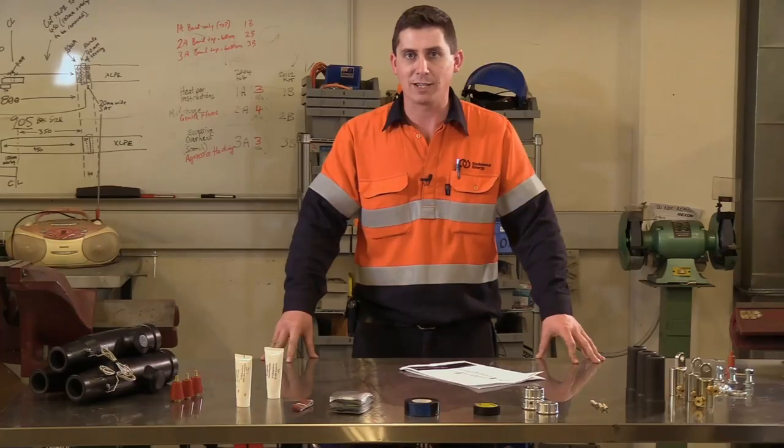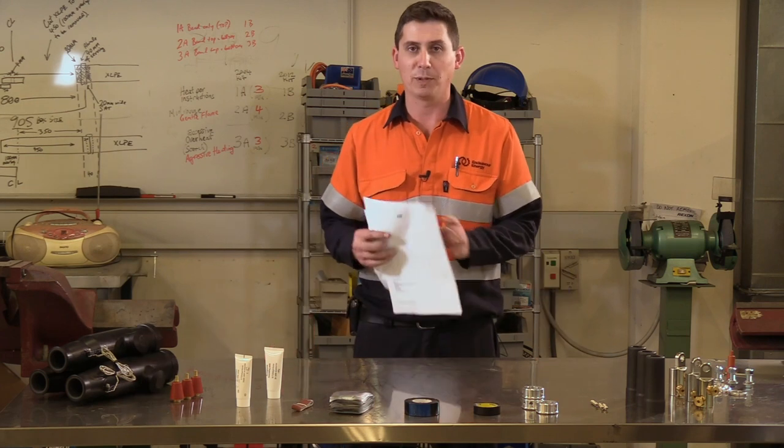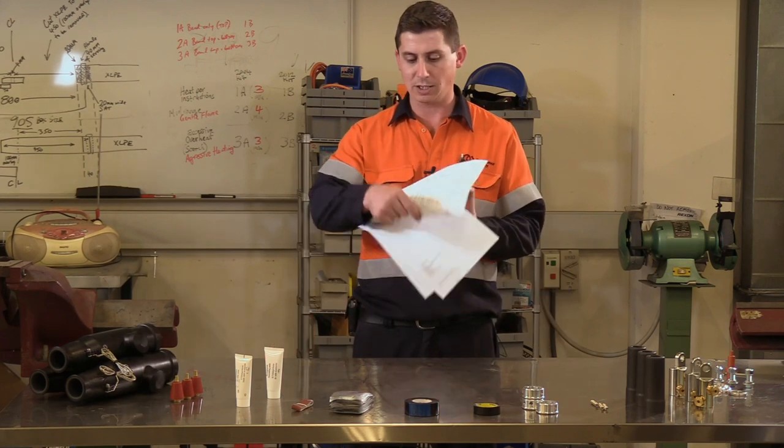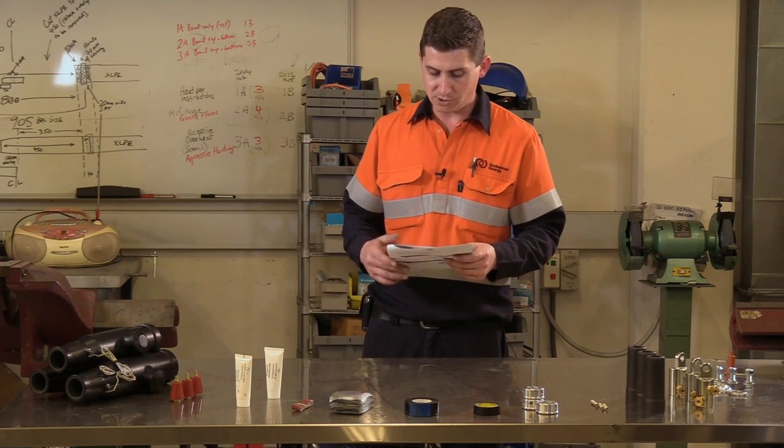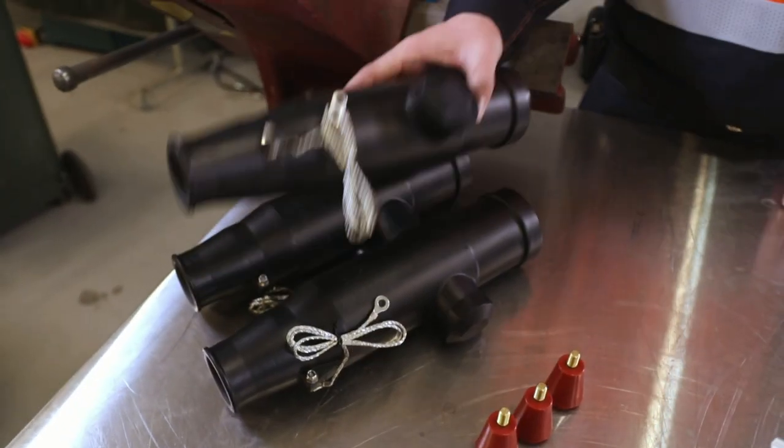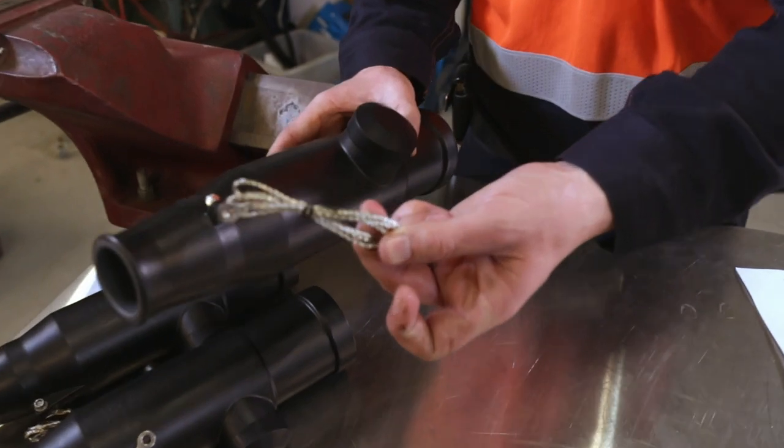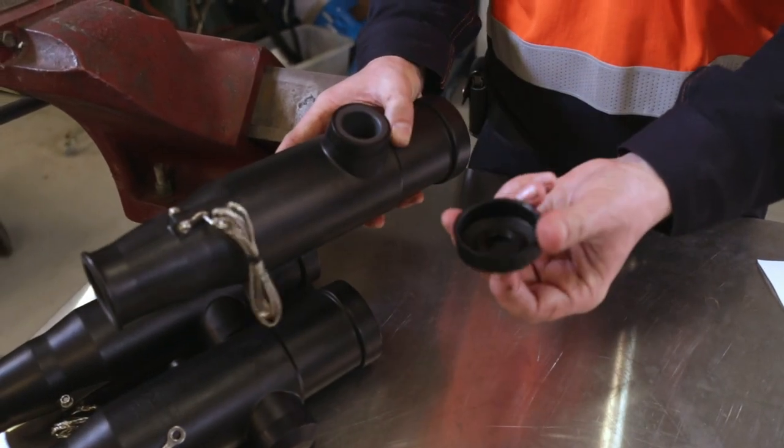So I've unboxed everything from the kit. We're going to get the instructions and go through the bill of materials to make sure everything is included. So we should start with the connector bodies with the IRFs already attached and the capacitive plug cover.